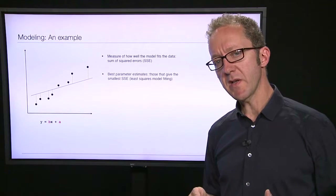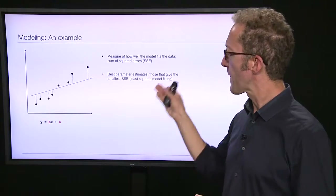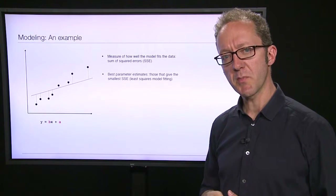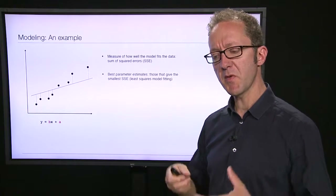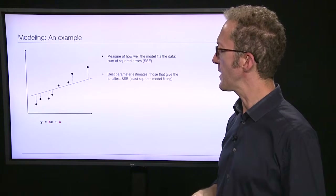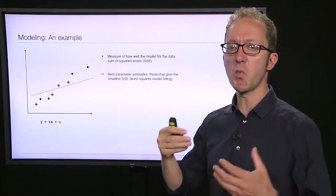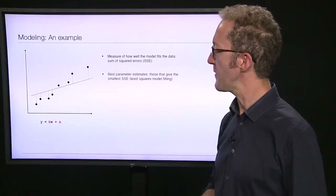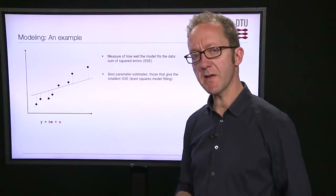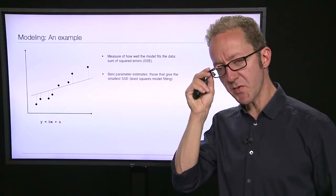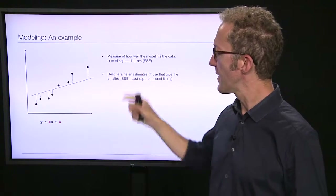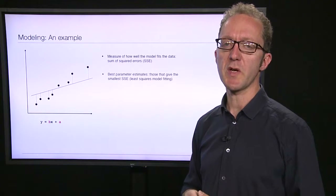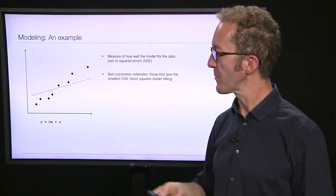How is it that we find estimates of parameter values? The thing we need in order to do model fitting is a measure of how well any given model fits the data that we have. In the case of scattered data like this, as you saw in the previous exercise, a measure we often use is the sum of squared errors — the sum of squared residuals.